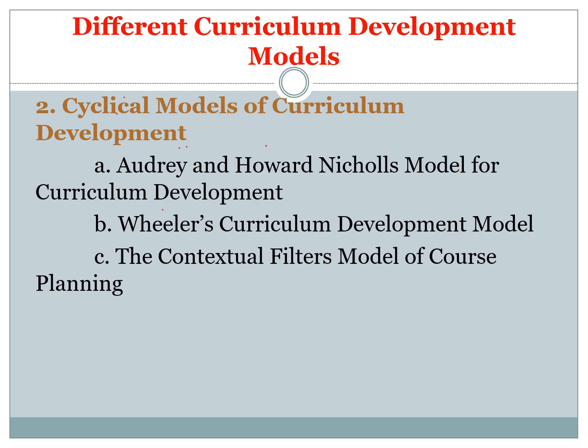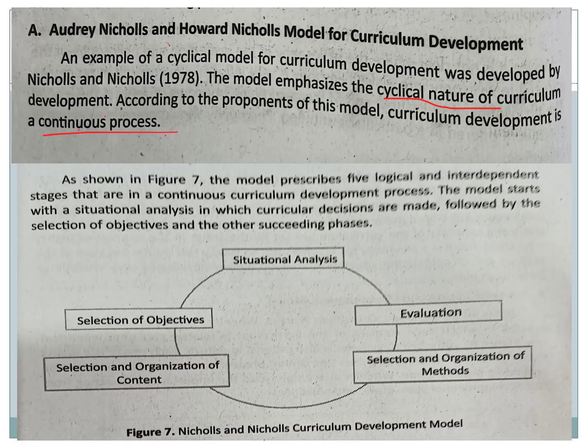The submodels of cyclical models are: A — Audrey and Howard Nicholls' model, B — Wheeler's Curriculum Development Model, and C — the Contextual Filters Model of Course Planning. We will now look at the details of the Audrey and Howard Nicholls' model. For this model, what you have to know is that it emphasizes the cyclical nature of curriculum and that curriculum development is a continuous process.